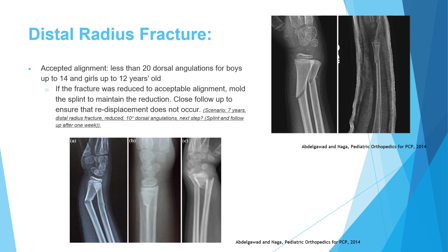Distal radius fractures can be angulated but not displaced — greenstick — or torus, meaning failure of one cortex with the other cortex intact, or complete fractures with displacement. The fracture can be in the metaphysis or at the level of the physis, which is Salter-Harris, and we'll see some examples for that.